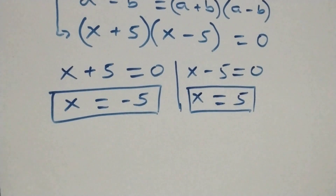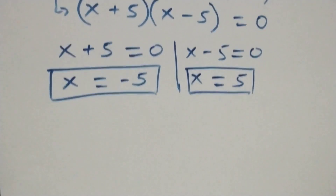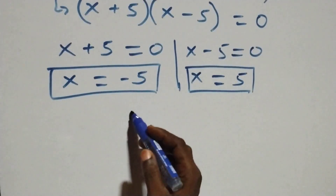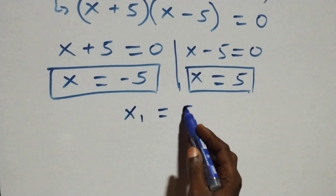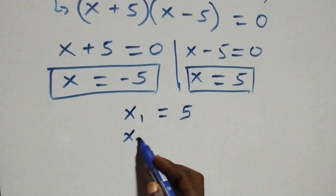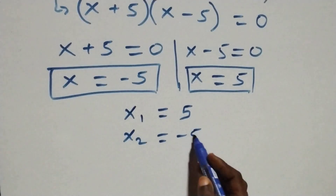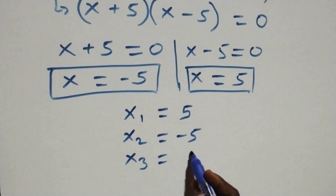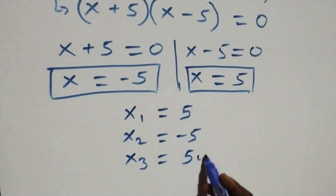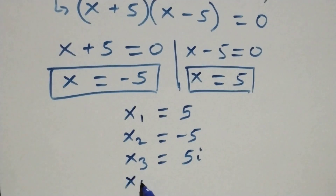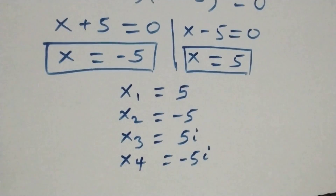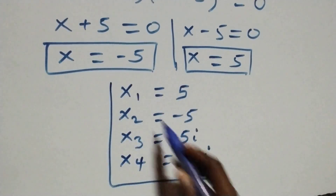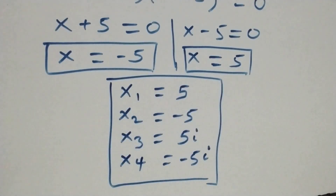Hence we have two real solutions as well. Writing all the solutions together: x₁ equals 5, x₂ equals minus 5, x₃ equals 5i, and x₄ equals minus 5i. So we have four solutions altogether — two real and two complex. Now let's check if these satisfy the given problem.